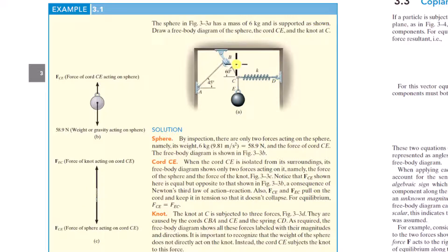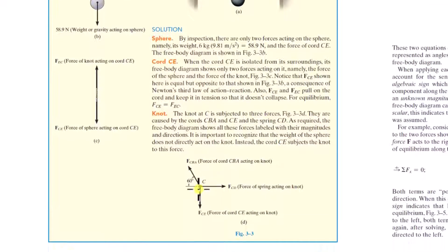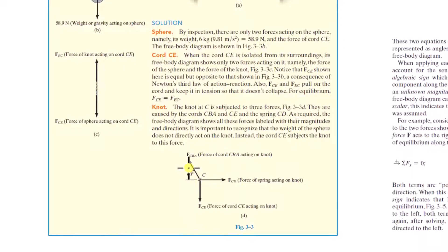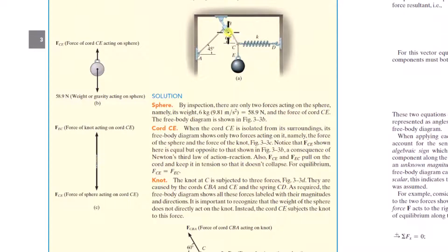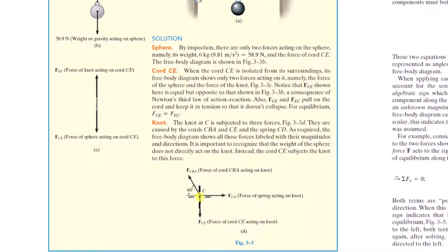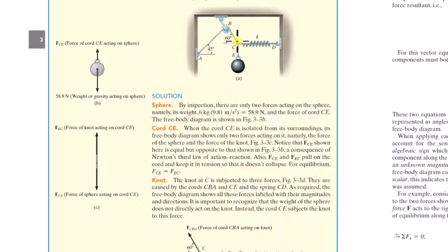You can also see how the author just separates this knot here, isolates it, and then shows the forces on the knot from this piece of rope, this piece of rope, and this spring. Those lines of action all meet, so you can do that as well — just cut right where the spring and the two pieces of rope are coming into the knot.